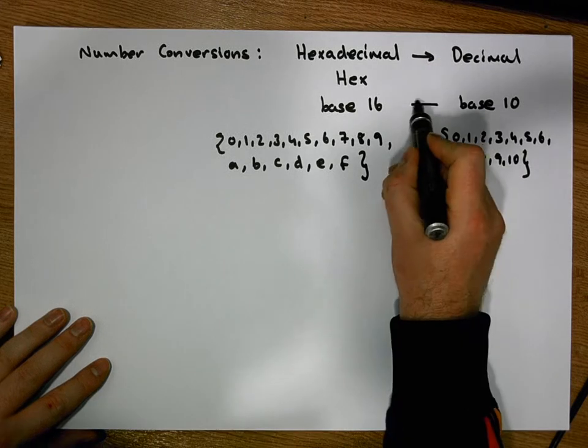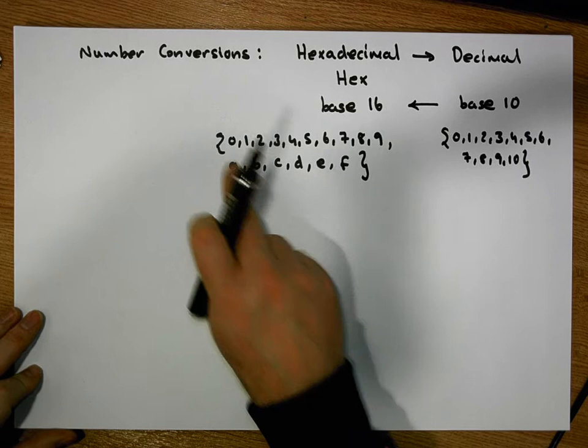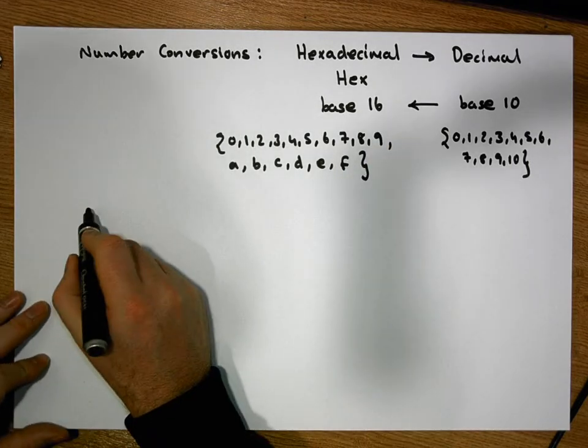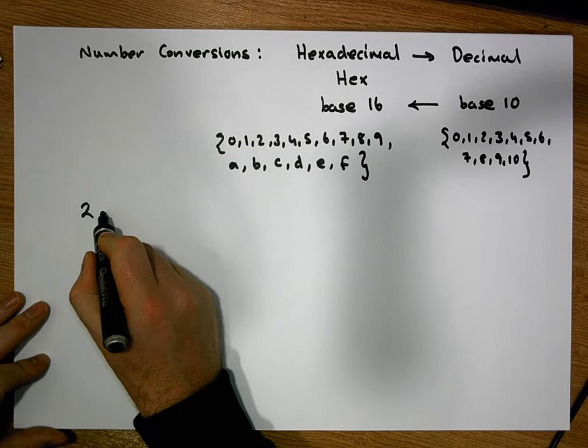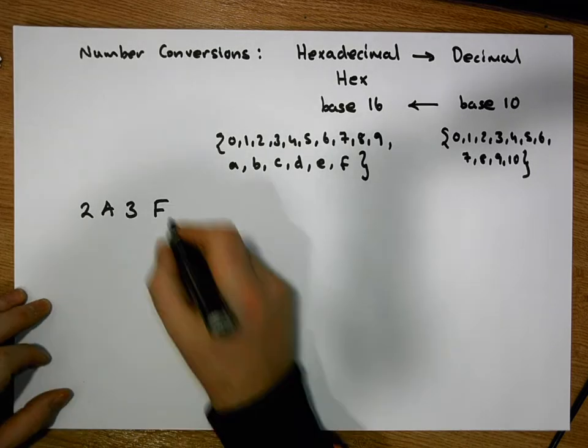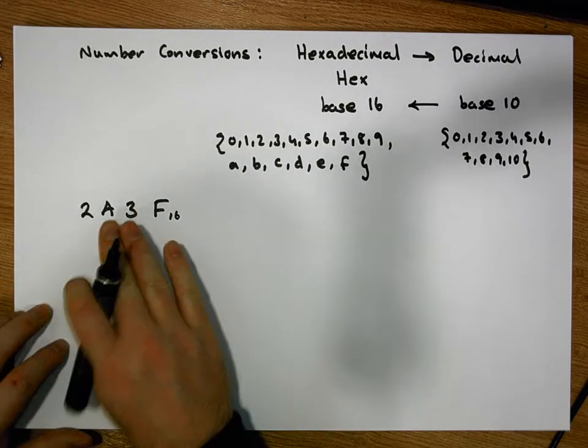Let's consider a hexadecimal number. So let's consider the number 2A3F as an example, and this is in base 16. So we want to convert this number to decimal.